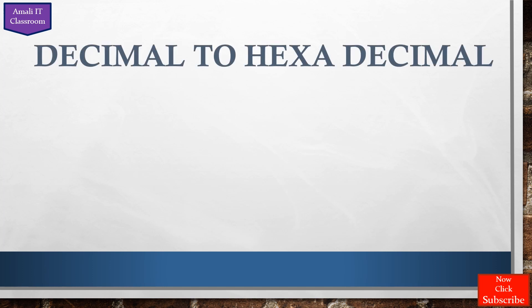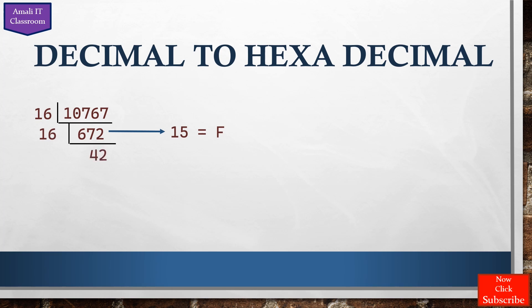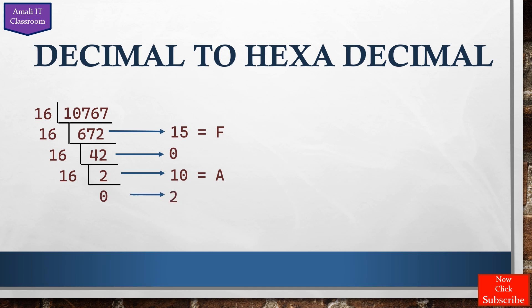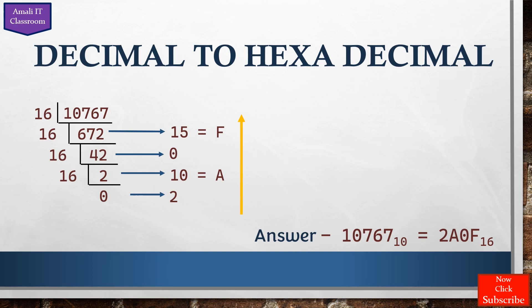Now we can convert decimal to hexadecimal. The example given is 10,767. Divide 10,767 by 16 — giving 672 remainder 15. Then 672 divided by 16 gives 42 remainder 0. Then 42 divided by 16 gives 2 remainder 10. Then 2 divided by 16 gives 0 remainder 2. Reading from bottom to top: 2, 10, 0, 15. In hexadecimal, 10 is represented as A and 15 is represented as F. So the final answer is 2A0F base 16.